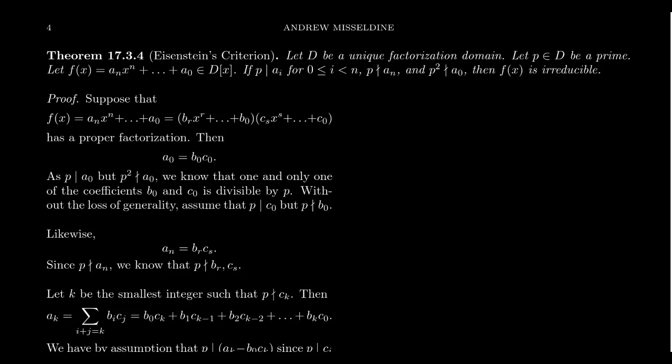So we're going to prove this by contradiction. Suppose that f is in fact reducible, has a proper factorization. So it'll factor as (bᵣxʳ + ... + b₀)(cₛxˢ + ... + c₀). So this is a proper factorization into polynomials. Neither of the two polynomials are constant polynomials. These are polynomials of smaller degree.